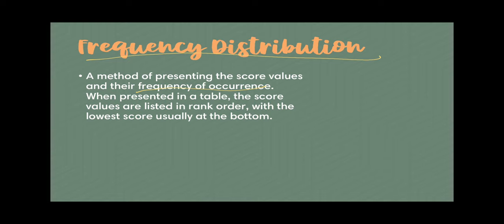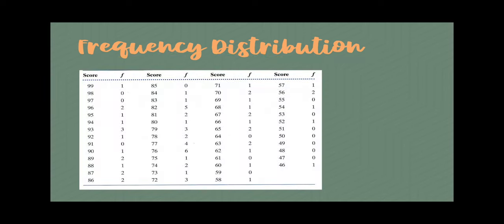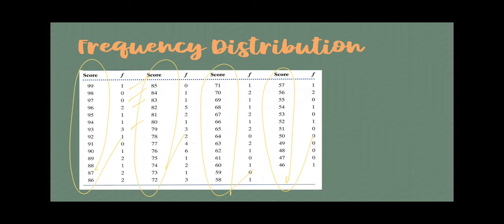When presented in a table, the score values are listed in rank order. If this is a continuous variable, we go from the lowest to the highest or vice versa, and then we indicate how many times they occur in the data. This is an example of a poorly presented frequency distribution — the scores are just listed and the number of times they are occurring is just presented like that. While this is good in terms of arranging data, it doesn't really give us much meaning.